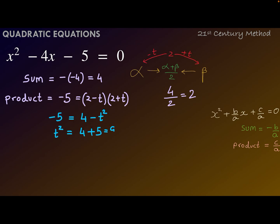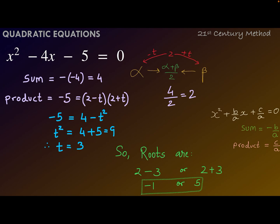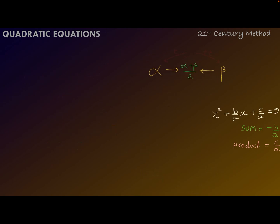Solving this equation we get t² = 9, or t = 3. If t = 3, the two roots alpha and beta are at a distance of 3 from the mid value 2, giving roots of 2 - 3 or 2 + 3, that is -1 or 5. The reason we don't take both positive and negative values of t is that even if t = -3, the roots remain the same.